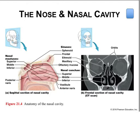The paranasal sinuses are hollow cavities found within the frontal, ethmoid, sphenoid, and maxillary bones. They're connected to the nasal cavity by tiny passageways. They help to warm and humidify the air, enhance voice resonance, and reduce the weight of the skull.